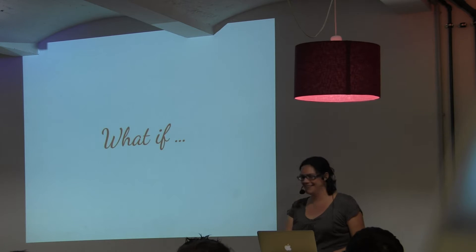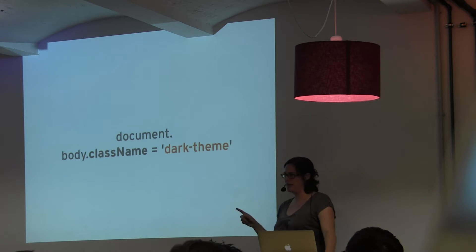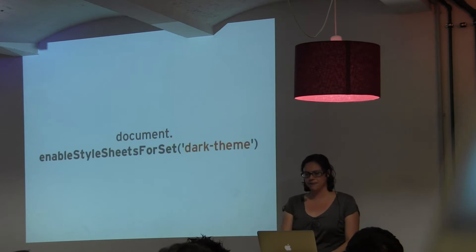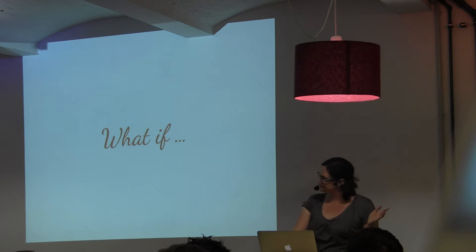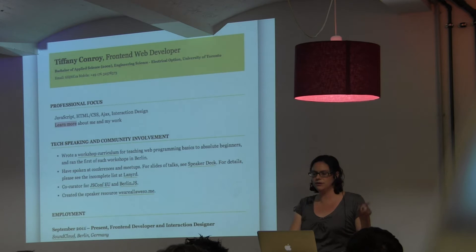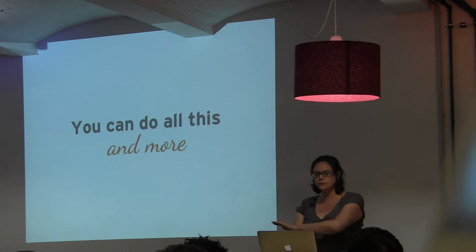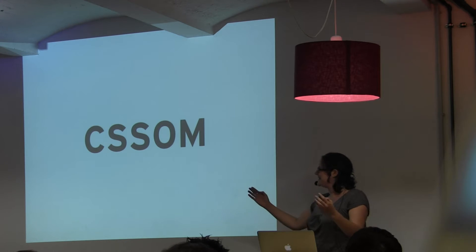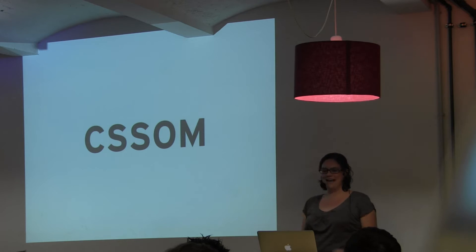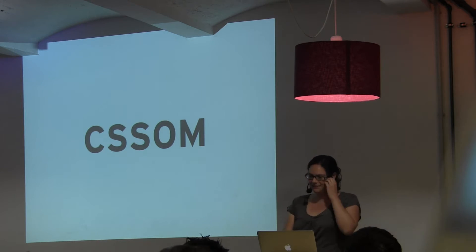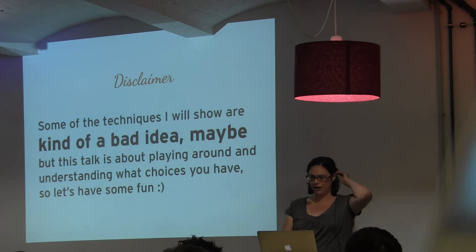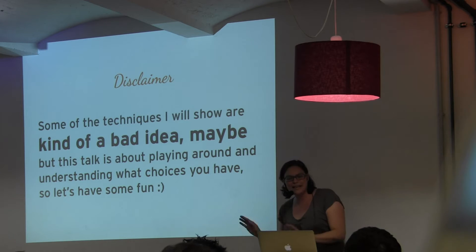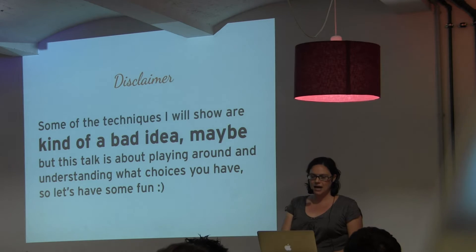What if, instead of using class names to define a changeable theme and setting the class name on the body, you could enable and disable whole sets of stylesheets? What if you could offer a print preview with a toggle button? You can do all of this and more with the CSSOM. Disclaimer: some of the techniques I'm going to show you are kind of a bad idea maybe, but this talk is really about playing around and understanding the choices that you have, so let's have some fun.